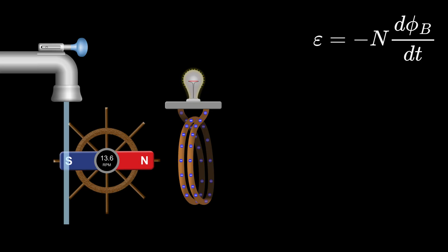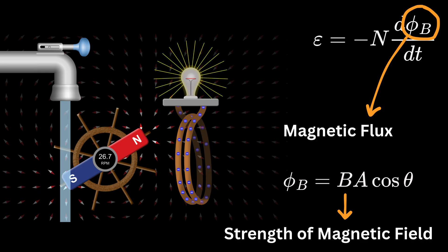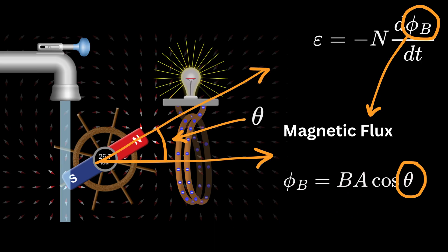Let's understand what that means. E is the amount of electric voltage created in the wire. N is the number of loops in the wire. Phi b means magnetic flux, which is a fancier way of saying how many magnetic lines pass through the loop, and is given as b times a times cosine of theta. B is the strength of the magnetic field. A is the area of the loop. And theta is the angle between the direction of the magnetic field and the surface of the coil.